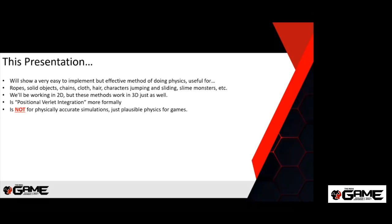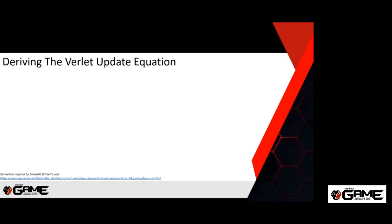Let's derive the Verlet update equation — it sounds mathy but it's going to be pretty easy. If you think about physics and you want to program some physics, really what you want to know is: how do you move an object from where it was last frame to where it should be this frame? That's what our physics update equation is going to do for us.